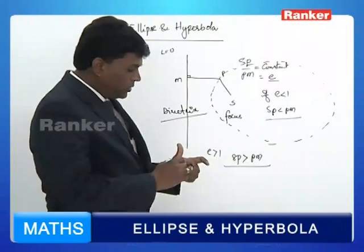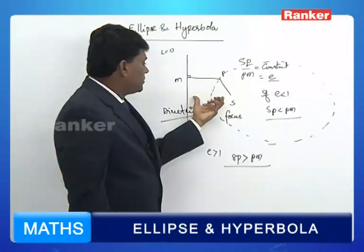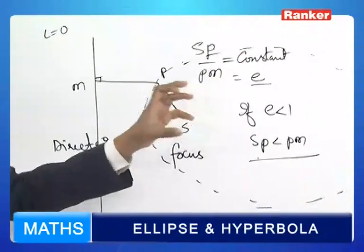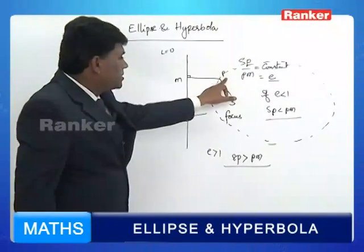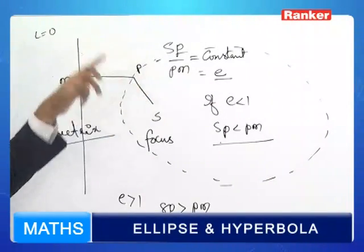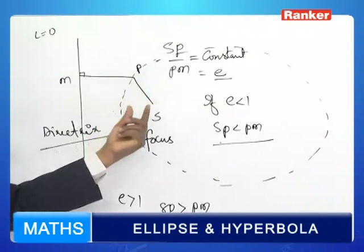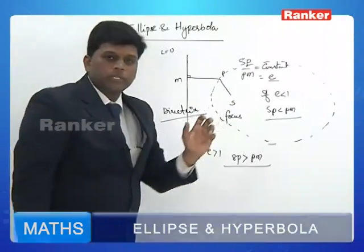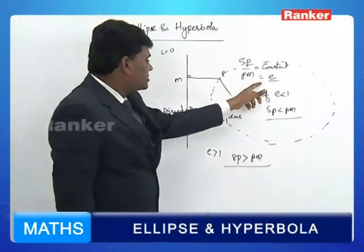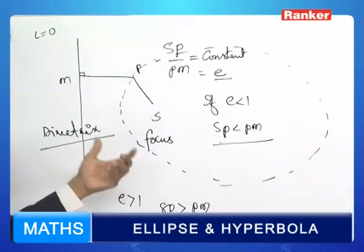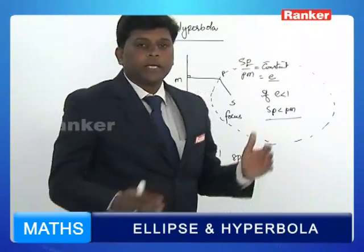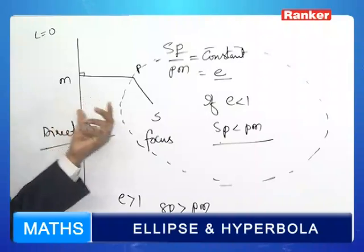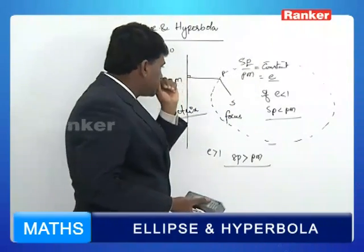Based on this fundamental definition, we can define both curves at a stretch. The locus of a variable point moving such that the ratio of its distances from a fixed point and a fixed line is always a constant e is defined as a conic section. In particular, if e is less than 1, the conic is an ellipse, and if e is greater than 1, the conic is a hyperbola.